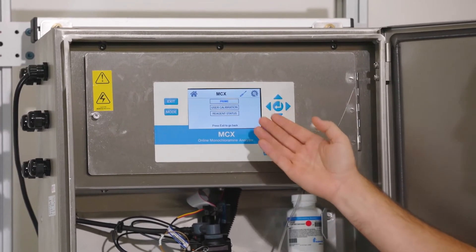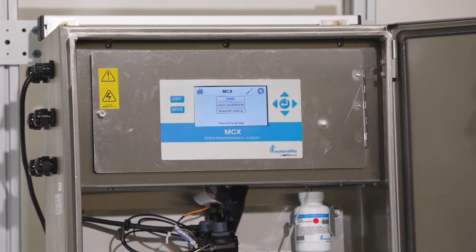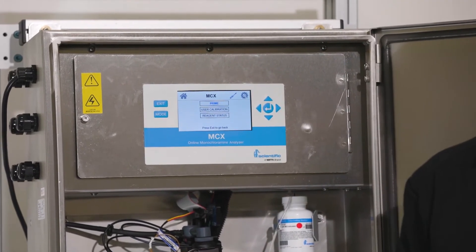This will bring up a Prime option, a User Calibration option, and a Reagent Status option. Just leave the screen as is for the next step.